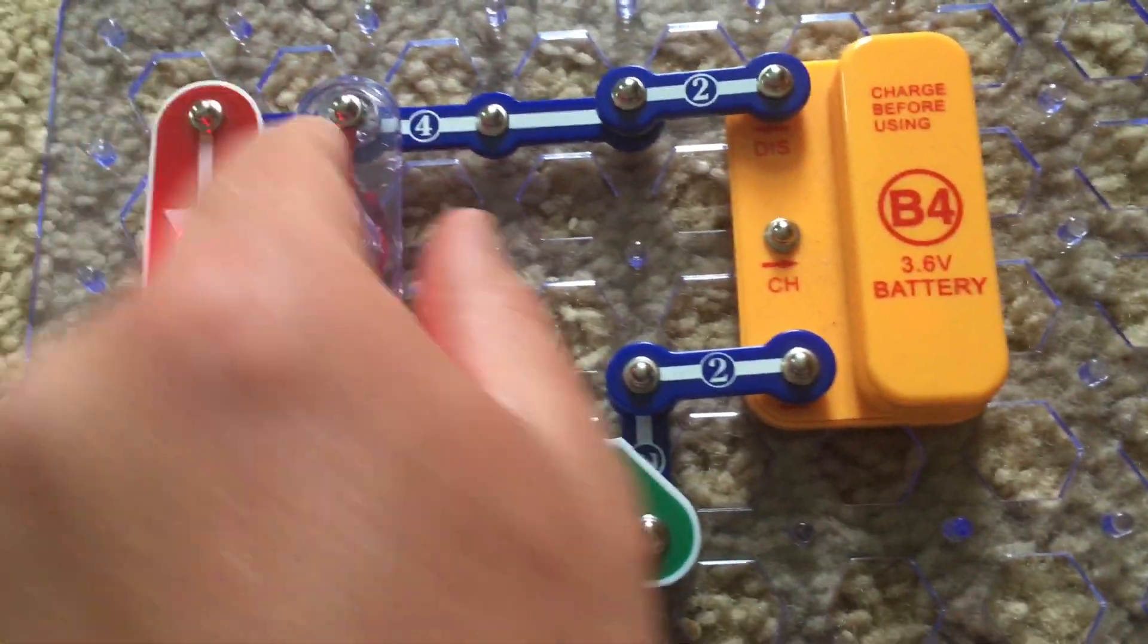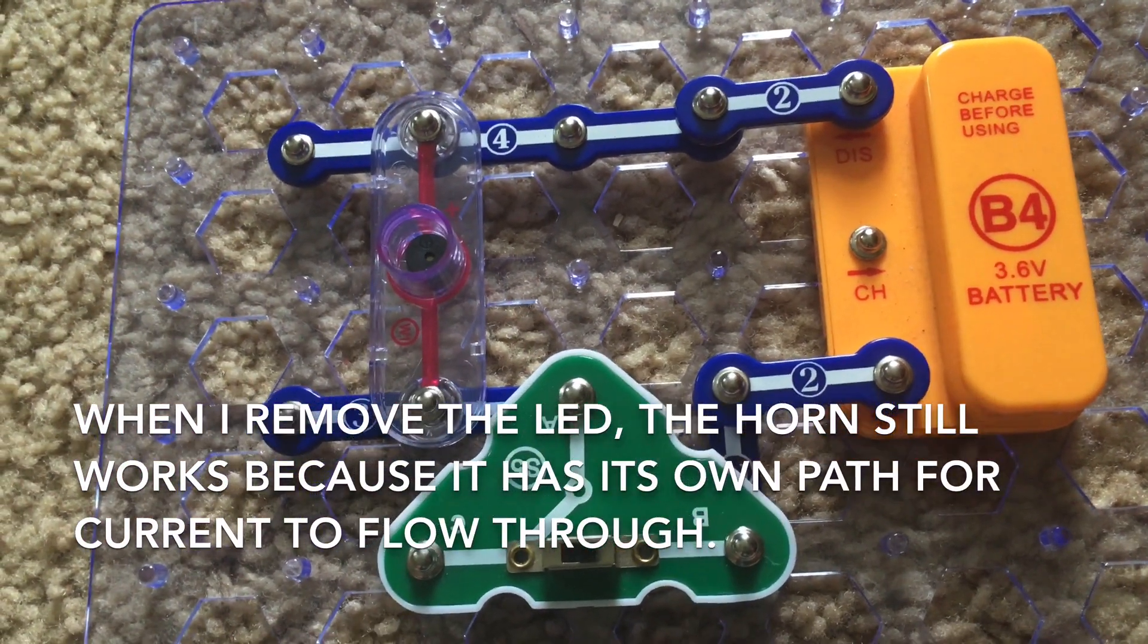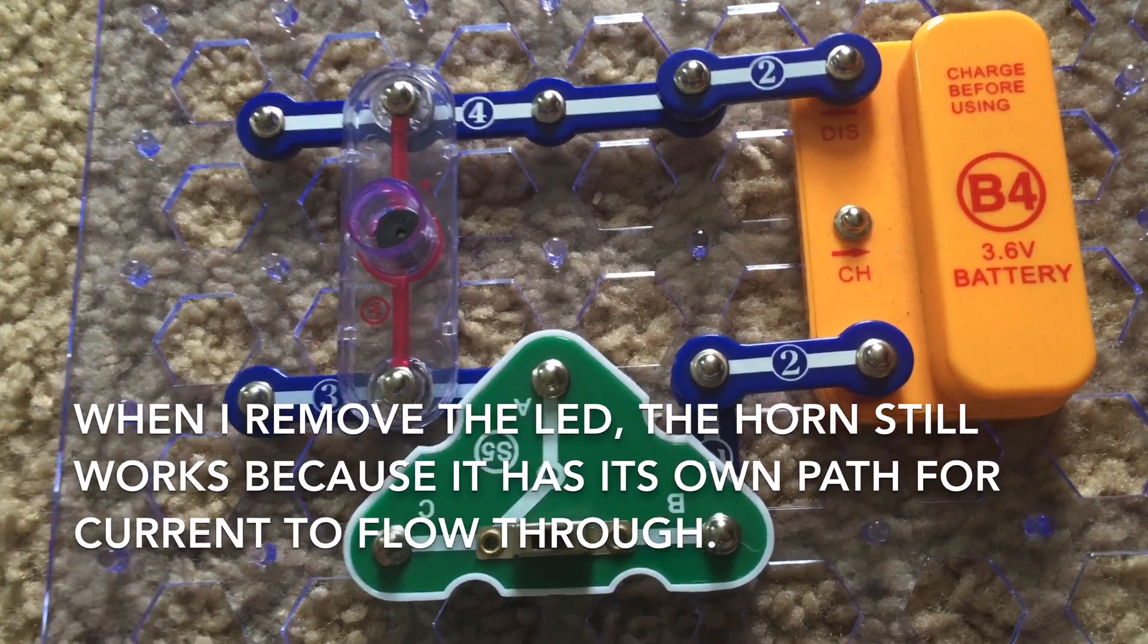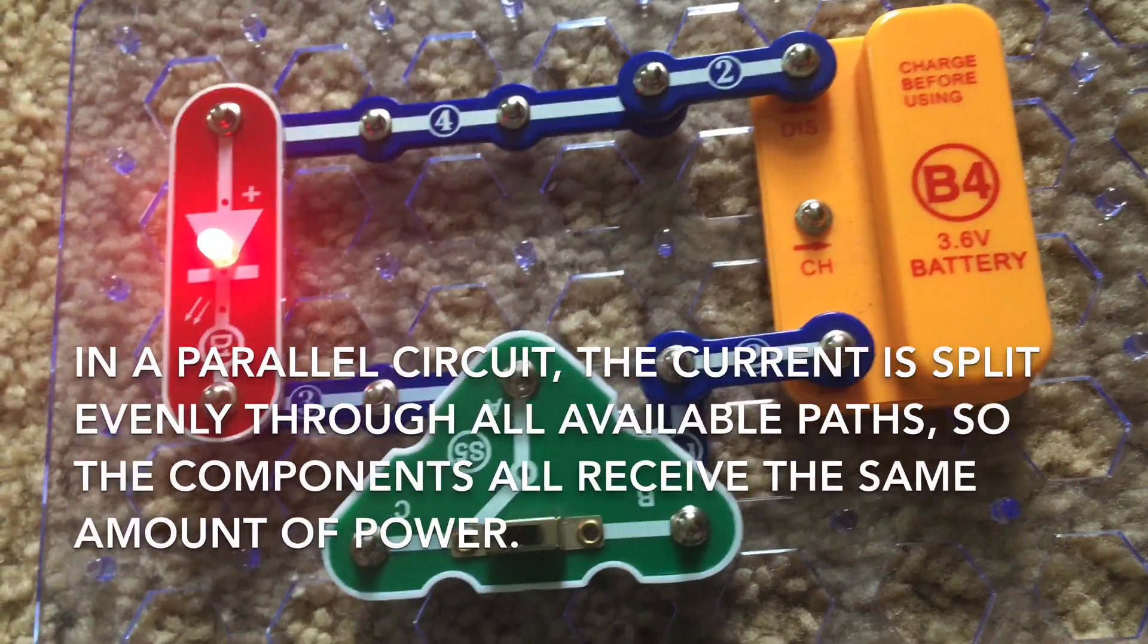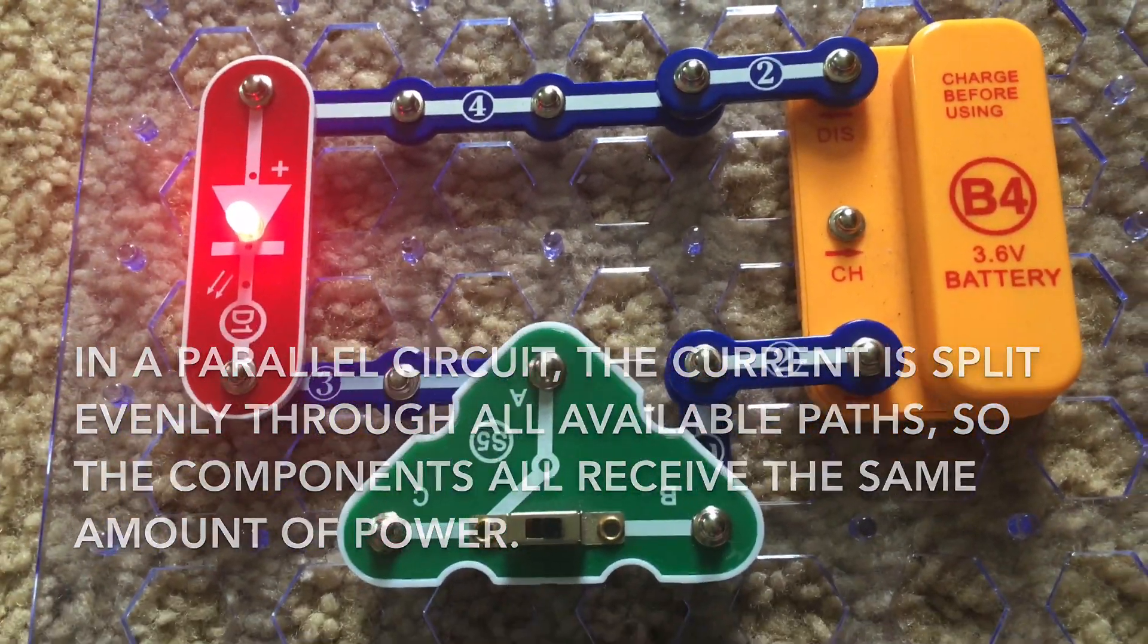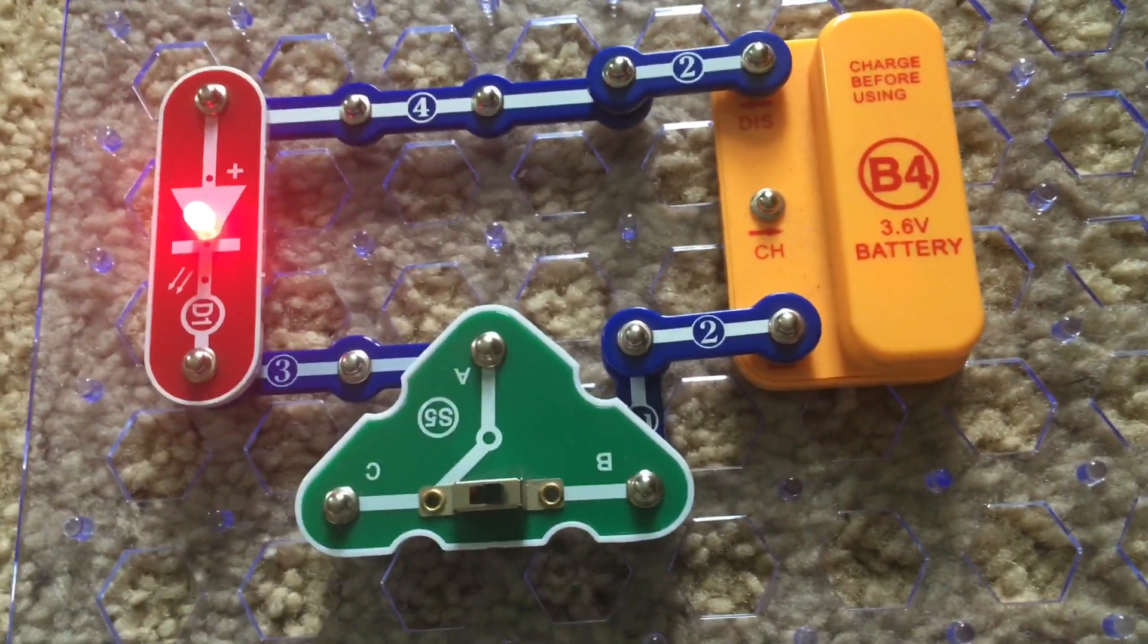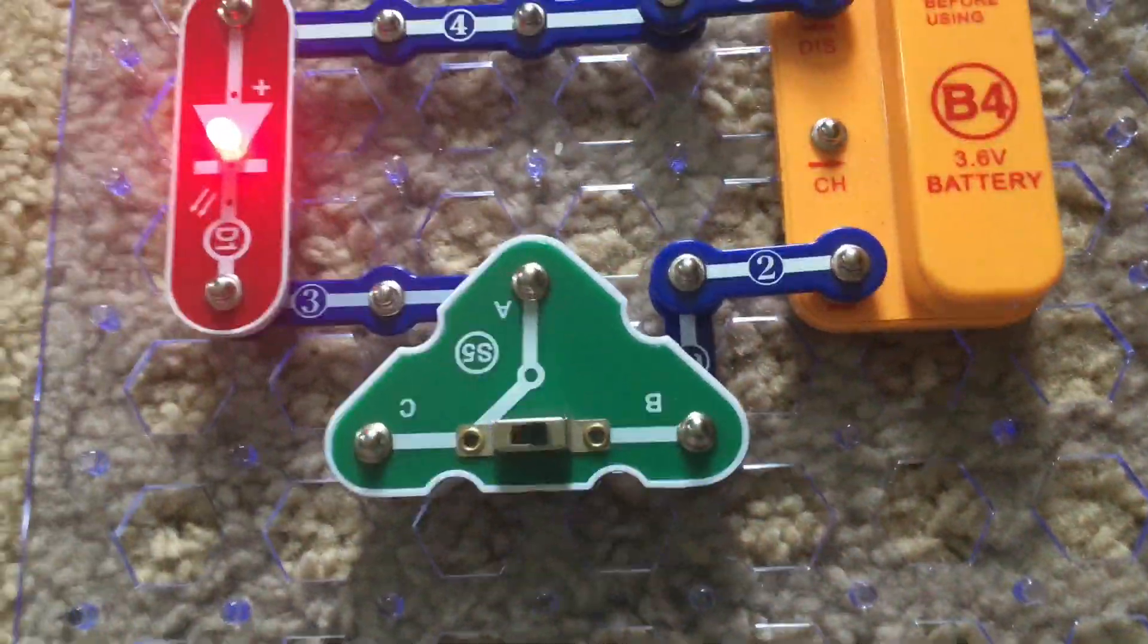When I remove just one of them, let's say the LED, the horn will remain on and its volume will not decrease. The brightness of the LED likewise will not decrease when I remove the horn. Each component has its own path for the current to flow through, even though both components use the same voltage.